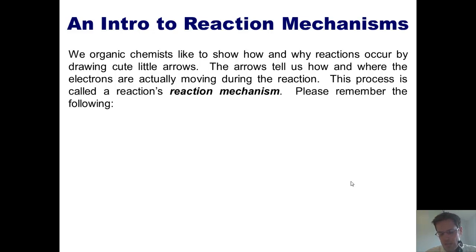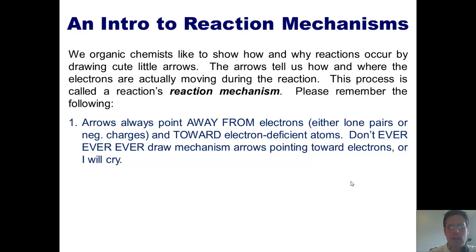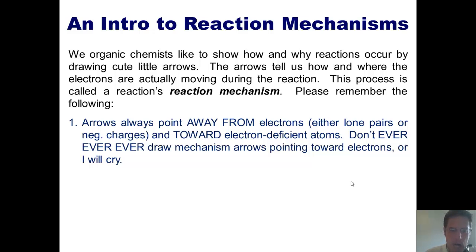When you draw a reaction's mechanism, please remember the following. One: arrows always point away from electrons, which represent either lone pairs or negative charges, and toward electron-deficient atoms. Don't ever, ever, ever draw mechanism arrows pointing toward electrons, or I will cry.